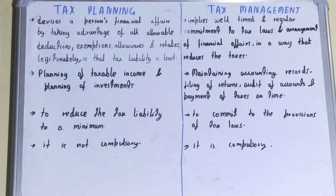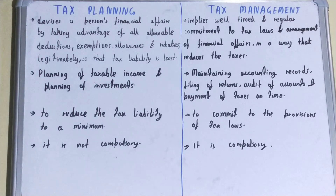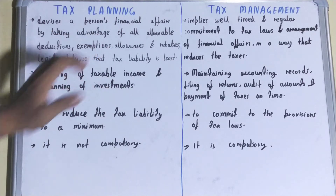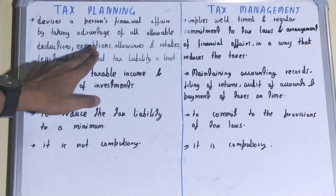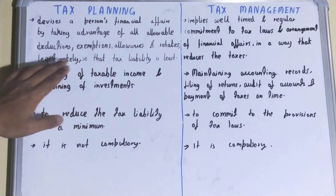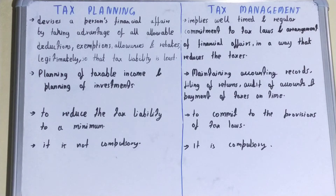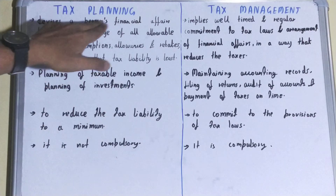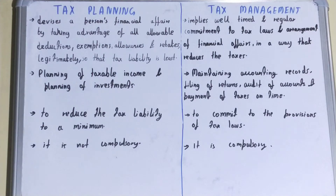In the case of tax planning, it devises a person's financial affairs by taking advantage of all allowable deductions, exemptions, allowances, and rebates legitimately, so that the tax liability is least. We try to change or arrange a person's financial affairs by taking advantage of all government policies to reduce liabilities as much as possible.